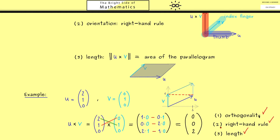In summary, you now know how to calculate the cross product of two vectors in R3, and you know three important properties of the resulting vector. To close, note that the cross product is not commutative — the order of u and v matters, as you can see immediately from the right-hand rule. You can verify this with the example above. You'll also find a link to the quiz for this video in the description. See you in the next video when we go back into the abstract world — have a nice day, bye!